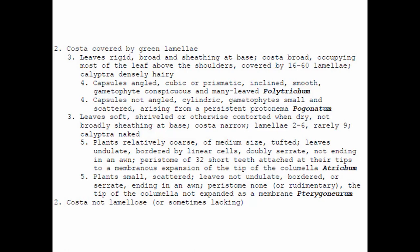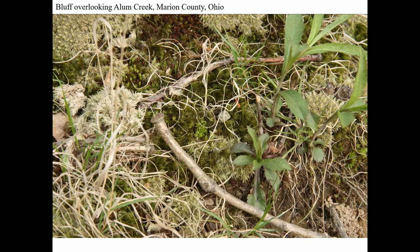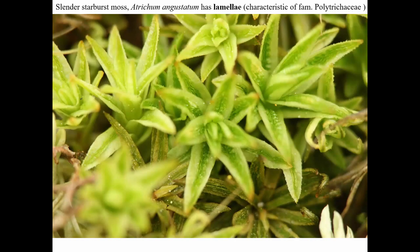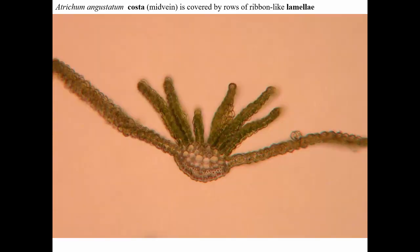All these genera — polytrichum, pogonatum, atrichum — are in the hair cap moss family. This includes one of the mosses we have to learn, called atrichum, or wavy star moss. It's an upright moss, an acrocarp. The ruffled-looking region in the center of the leaves contains the lamellae. A microscope view shows these ribbons of cells running lengthwise, and a cross section also shows them — a distinctive feature.